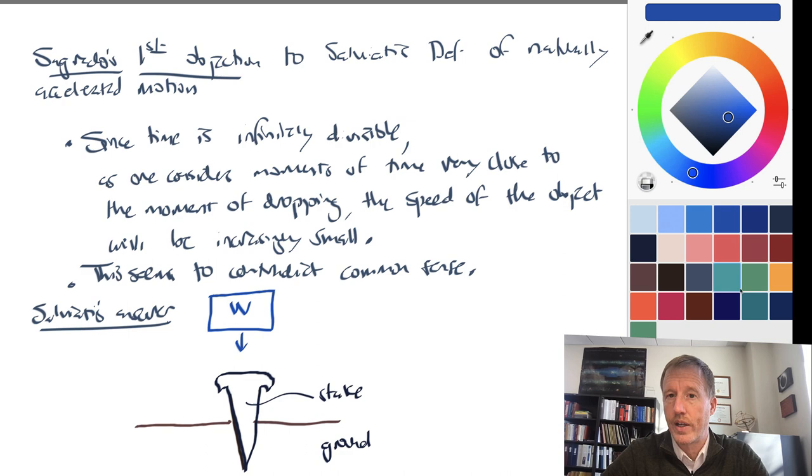And what about if you drop this weight from just above the stake? You'll find when you do so, it hardly drives the stake into the ground at all. That's because it acquired very little speed. And in fact, if you put it above the stake by just the breadth of a leaf, a tiny amount, and you drop it, it will not drive the stake into the ground hardly at all.